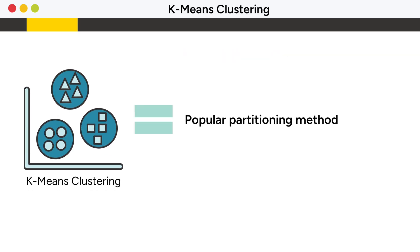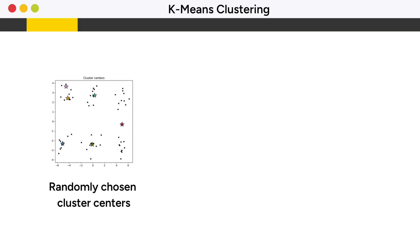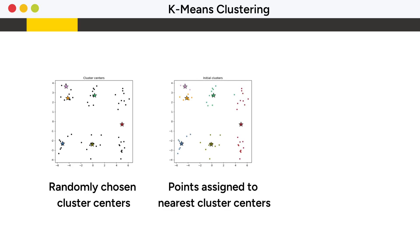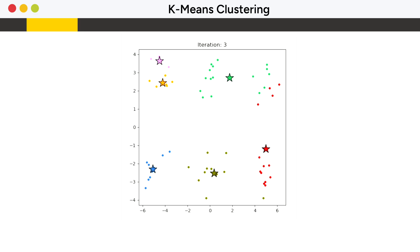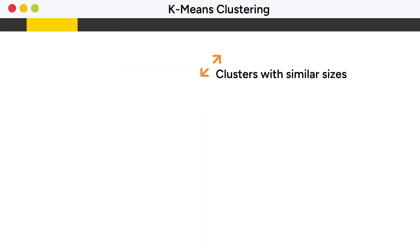K-means clustering is a popular partitioning method that divides the data space into k distinct clusters. It starts with randomly selected k cluster centers, and all data points are assigned to the nearest cluster centers. Then the cluster centers are recalculated as the centroids of the newly formed clusters. This process of assigning data points to cluster centers and recalculating them is repeated until the cluster centers stop moving. Clusters formed by K-means tend to be similar in size and convex shaped.